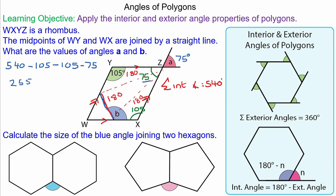But we also know that this line here joins WY and WX exactly halfway, so the two angles must also be equal because the lengths are equal. So if you do 255 divided by 2, that will tell us the size of angle b, which is 127.5 degrees.